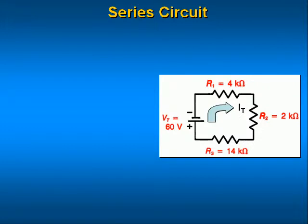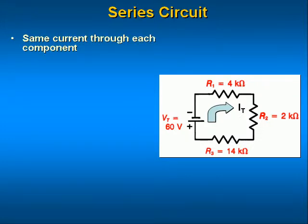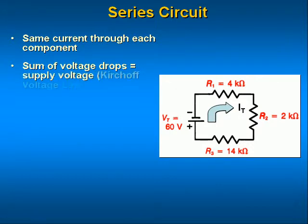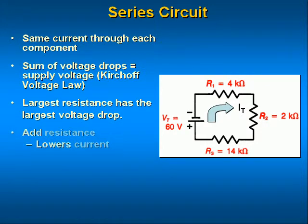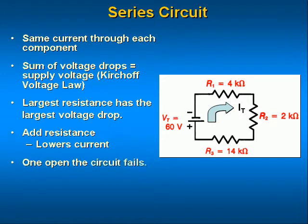The sum of the voltage drops across all the components will equal the supply voltage. This is Kirchhoff's voltage law. The largest resistance has the largest voltage drop. If you add resistance, the current will drop in value. One open anywhere in the circuit and the circuit fails. The total resistance is the sum of all resistors.